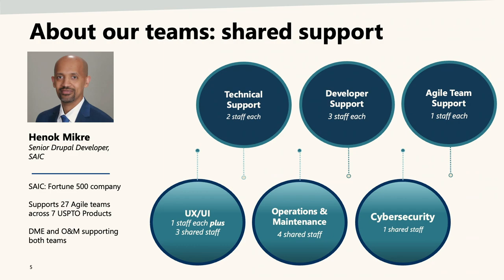My name is Heno Pucre and I'm one of the developers on the contract side. ACIC is the prime — ACIC supports 27 agile teams across seven different USPTO products. This is a modernization and O&M contract to support the public and intranet teams, each with its own product owner and various supporting roles. The technical needs, developers, and agile team support are dedicated to each team, while UI, UX, IA, O&M, and cybersecurity are shared across the teams. We think this has worked really well.